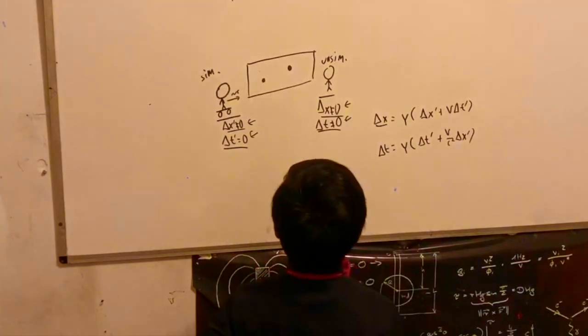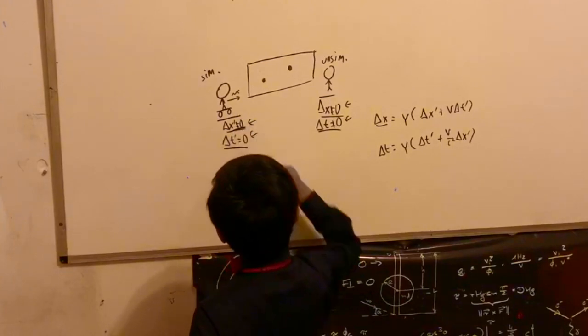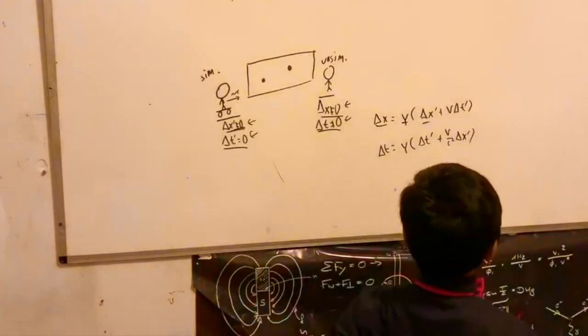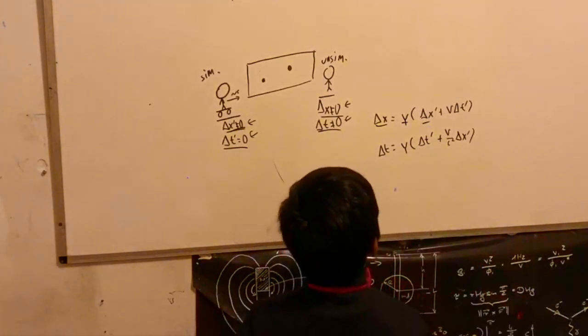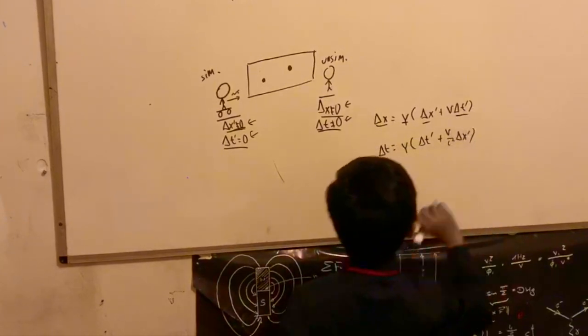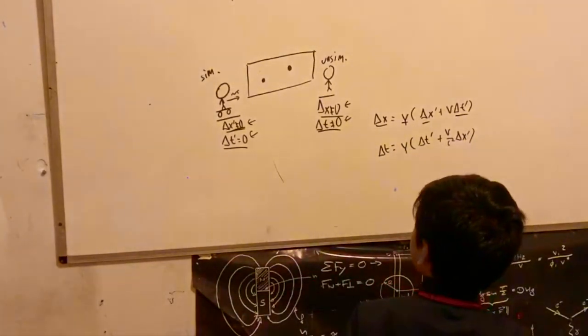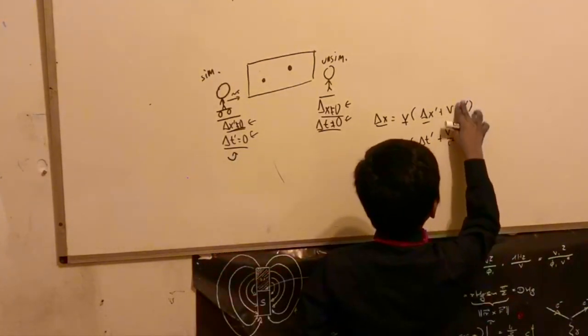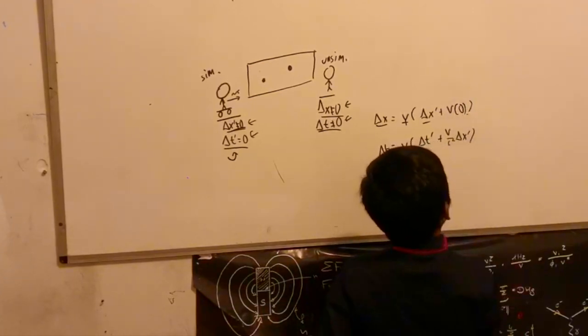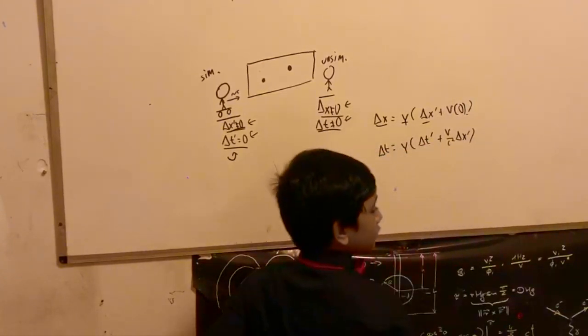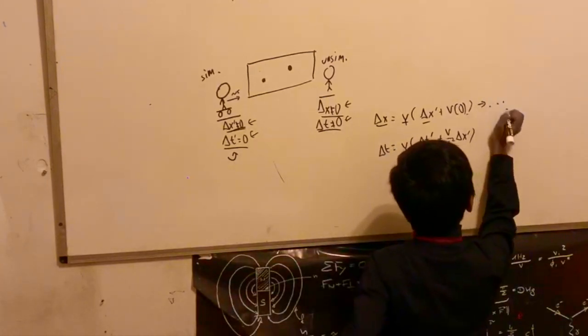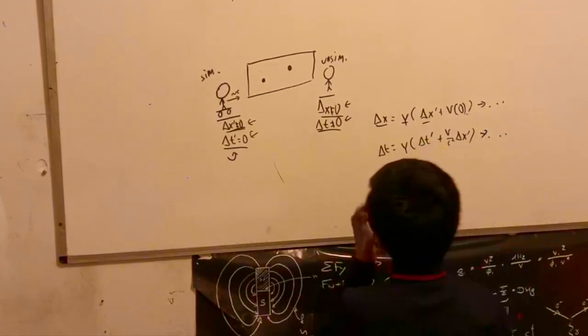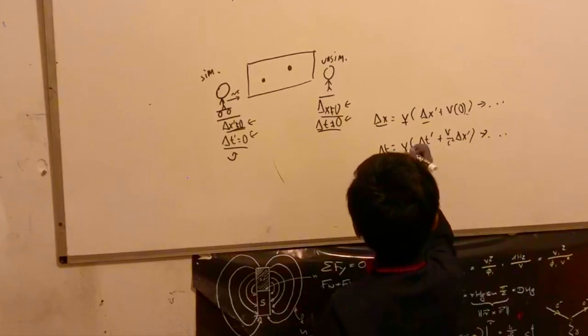We know that delta x is not equal zero, so we can safely leave that. Delta x prime is not equal zero, we've observed, so we can also safely leave that. Gamma definitely not equal to zero in any sort of situation. However, delta t prime, this is when things start to get interesting because delta t prime is equal to zero. Let's multiply this by a simple zero.